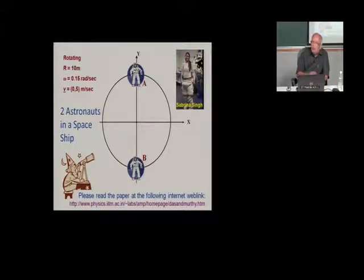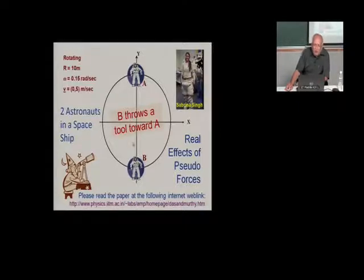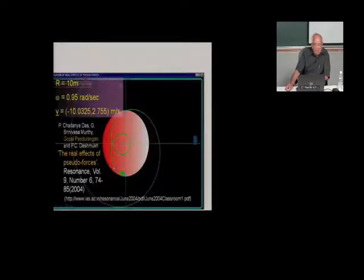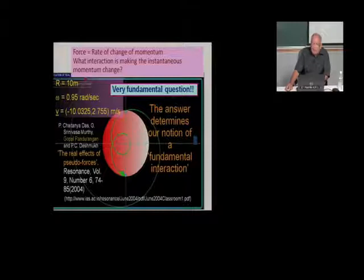With a circle radius of 10 meters and angular speed of 0.15 radians per second, if astronaut B throws a tool toward A with initial velocity components (0, 5) m/s, the trajectory — shown by a green line — is something one would not have imagined. These examples show how physics looks in non-inertial frames, connecting to the fundamental idea of what a physical interaction is.